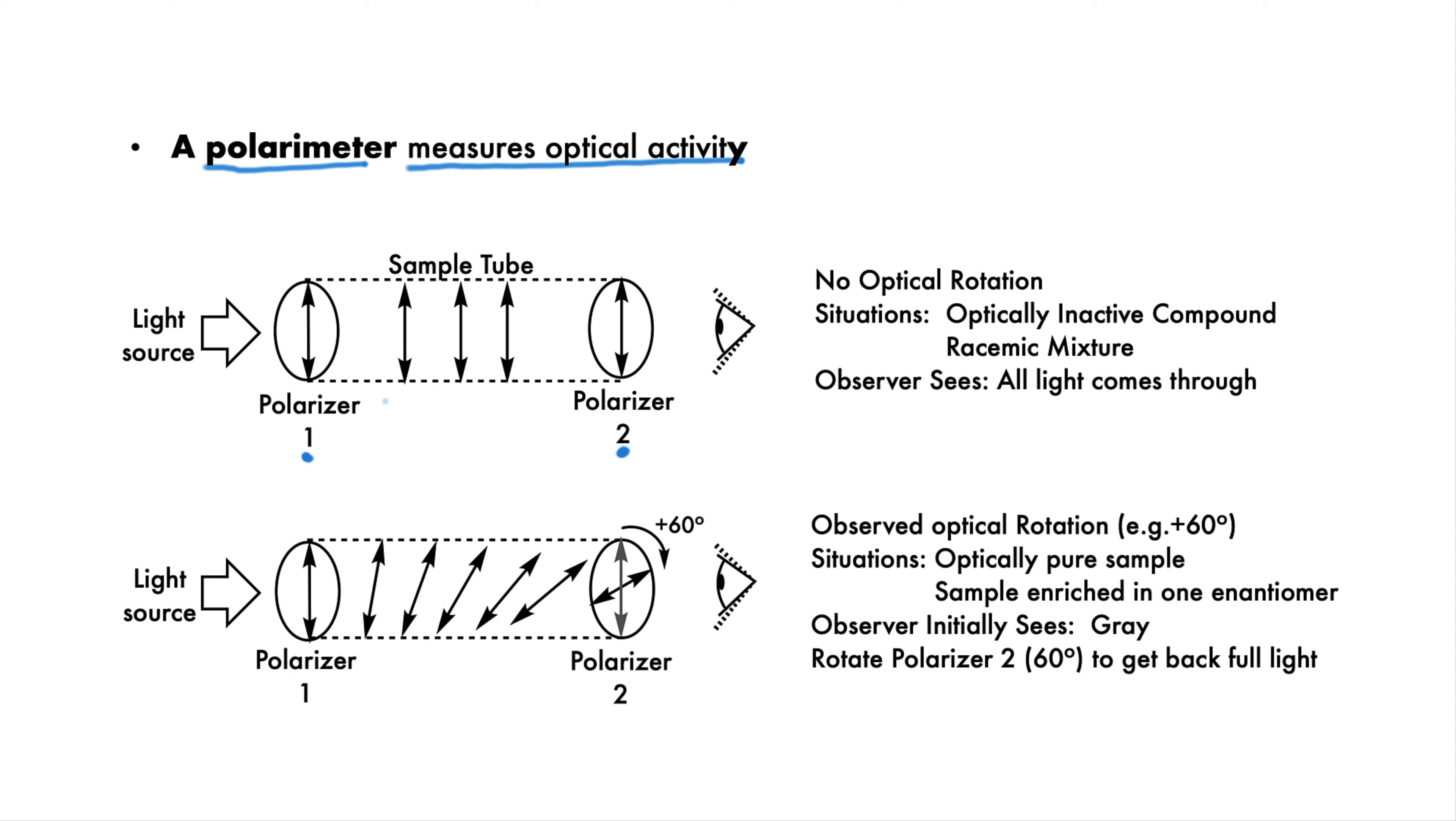Let's look at two possible scenarios. In the first, there is nothing in the sample tube which can cause optical rotation. The light that comes through the first polarizer is not rotated, and so all of it comes through the second polarizer, which is aligned with the first. The observer sees full light. We'll talk about the exact causes of optical inactivity next.